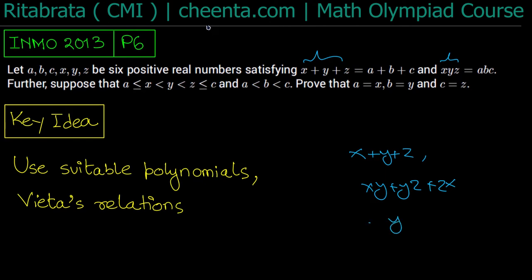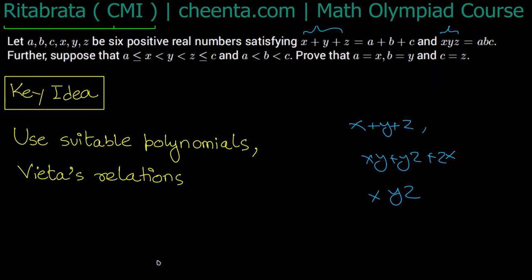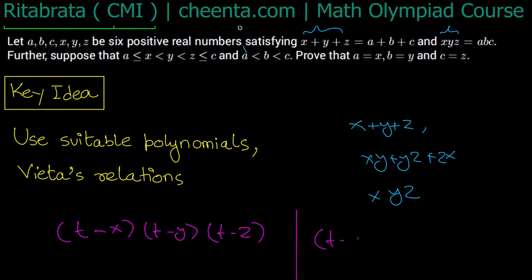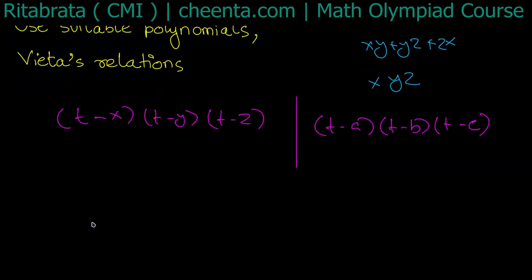So proving a = x, b = y, c = z is the same as proving that the two polynomials (t − x)(t − y)(t − z) and (t − a)(t − b)(t − c) are equal. This is an if-and-only-if condition — it's equivalent, and we'll prove it using polynomials, because Vieta's relations should be very useful here.